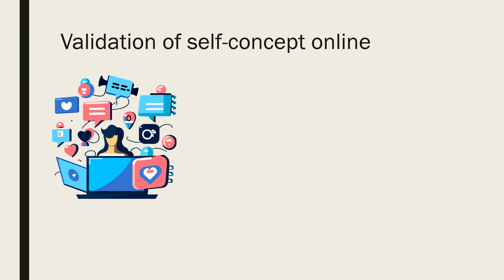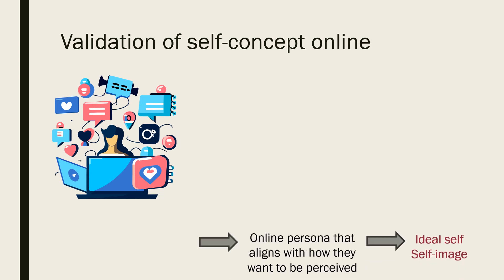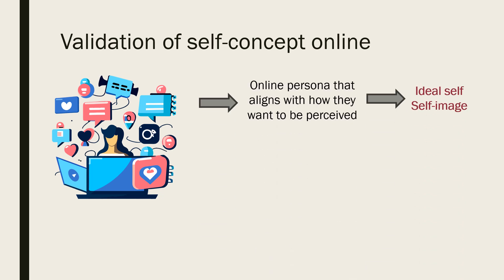By carefully crafting their online presence, social media users can not only self-validate their self-concept but also gain validation from others through likes, comments and follow accounts. Users often create a particular online persona or identity that aligns with how they want to be perceived, including aspects of their self-image and their ideal self. This can involve portraying oneself as adventurous, intellectual, humorous or any other desired characteristics, often through the content shared, captions and engagement with others.